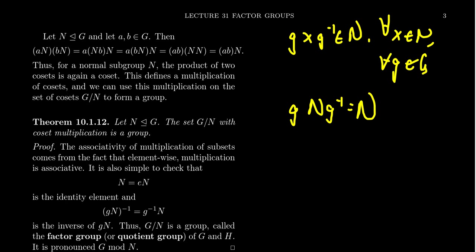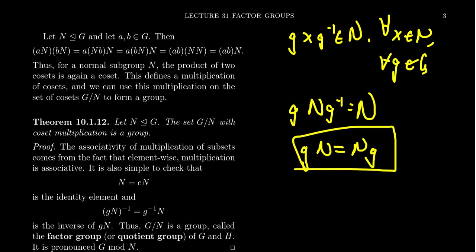The way we originally defined it, we say a subgroup is normal if all of the left cosets are equal to their corresponding right cosets: gN equals Ng. That's the condition we're going to use here.